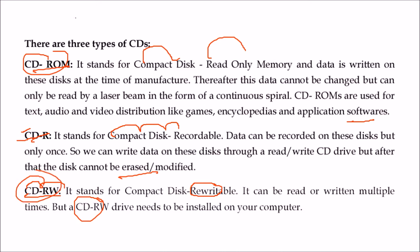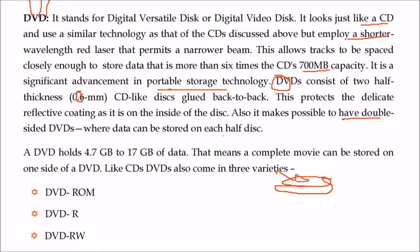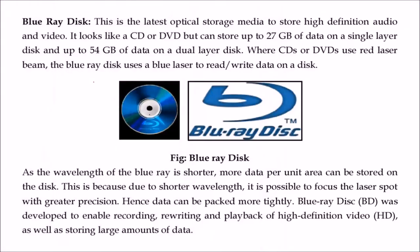DVD stands for Digital Versatile Disc. It uses similar technology to CD but with a narrower red laser beam, allowing more than 700 MB capacity. This is a significant advancement in portable storage. A DVD consists of two 0.6 mm CD-like discs glued back to back, protecting the reflective coating inside and enabling double-sided DVDs. DVDs hold 4.7 GB to 17 GB of data — enough to store a movie. There are three varieties: DVD-ROM, DVD-R, and DVD-RW.